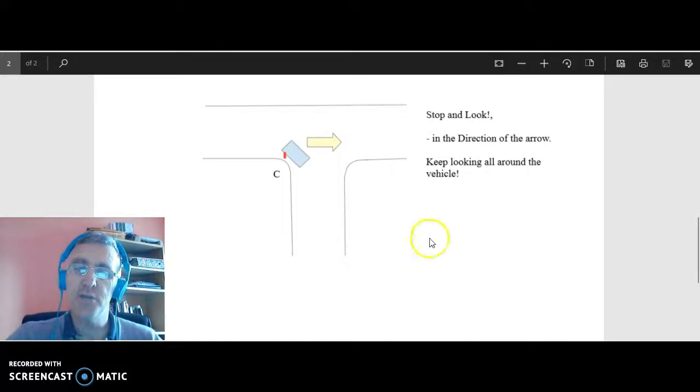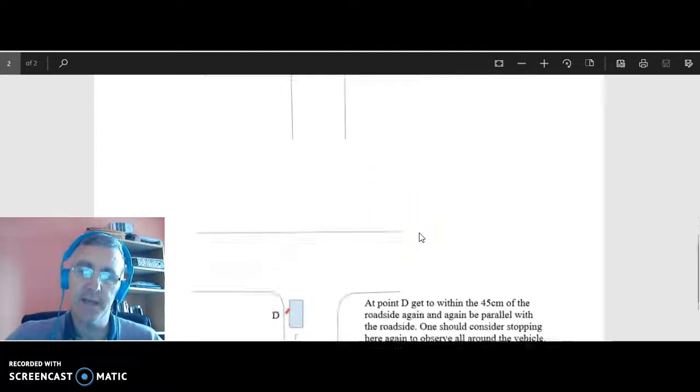Now at this stage of the maneuver then, you stop the car and you look in the direction of the arrow showing, just in case anybody comes up from their right hand side here on the diagram and swings into this road. Keep looking all around folks, very important.